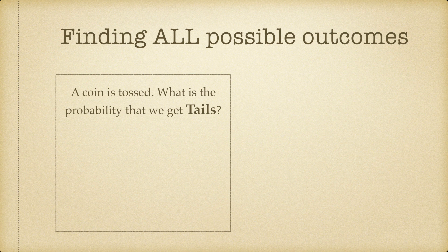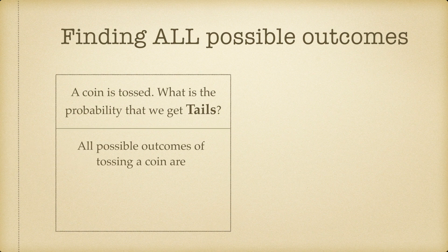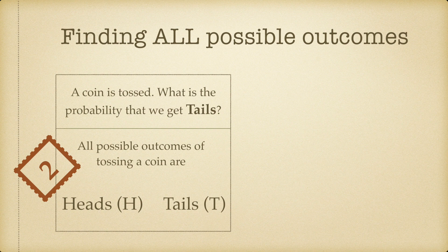If we were to toss a coin, what is the probability that we will get tails? The focus right now is not to find out probability, but to focus on finding out all possible outcomes. So what are the possible outcomes of tossing a coin? We can get heads or we can get tails. So if we were to toss one coin, there are only two possible outcomes.